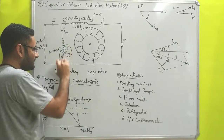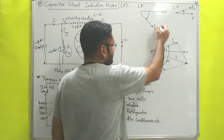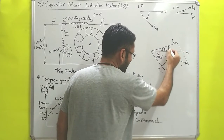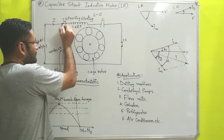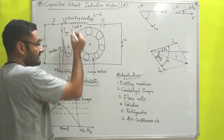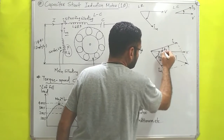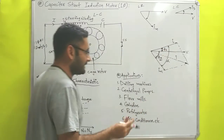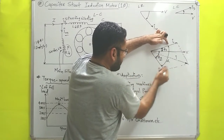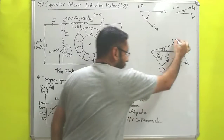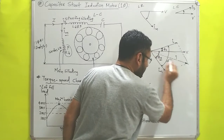Now for the working principle: the current Im flowing from the main winding lags behind the potential by some phase angle phi-m, and the current Is flowing from the starting winding leads the potential by some phase angle phi-s. Due to this, a phase difference alpha is created between the two currents Im and Is. If we draw the parallelogram, we get the resultant current.